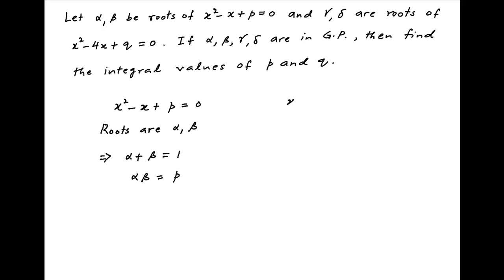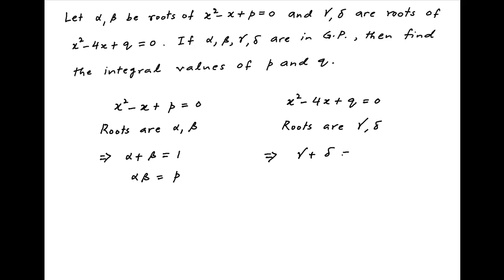We are also given the quadratic equation x squared minus 4x plus q equals 0, whose roots are gamma and delta. Therefore, the sum of the roots gamma plus delta is equal to 4, and the product of the roots gamma times delta is equal to q.